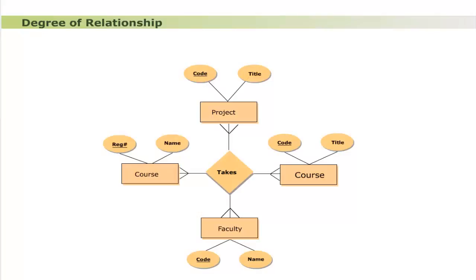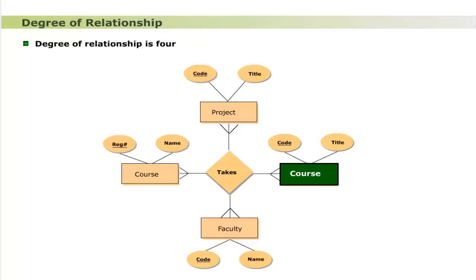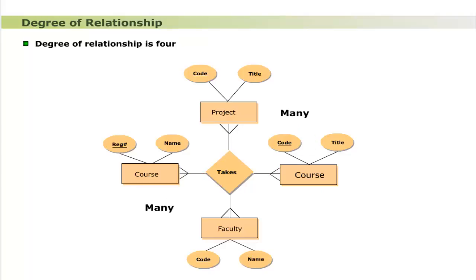The degree of a relationship is not restricted to three, but a degree beyond ternary is considered poor practice as it increases complexity. Higher degree relationships are advised to be decomposed to make them simpler. For example, a degree-four relationship 'takes' involving student, faculty, project, and course creates complexity: many students register many courses, many students register many projects, many faculty members are assigned many courses, and many faculty members supervise many projects.